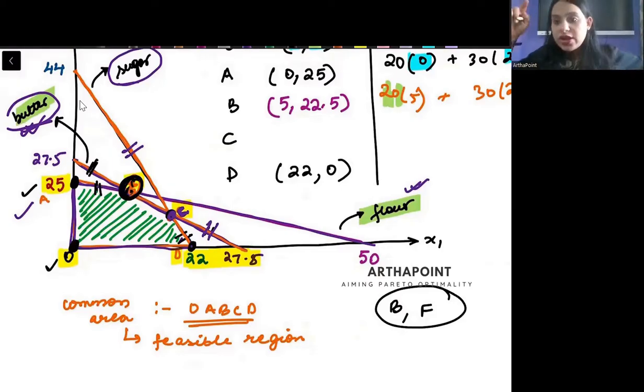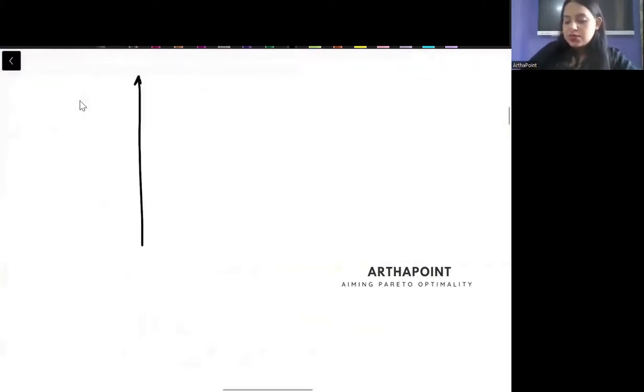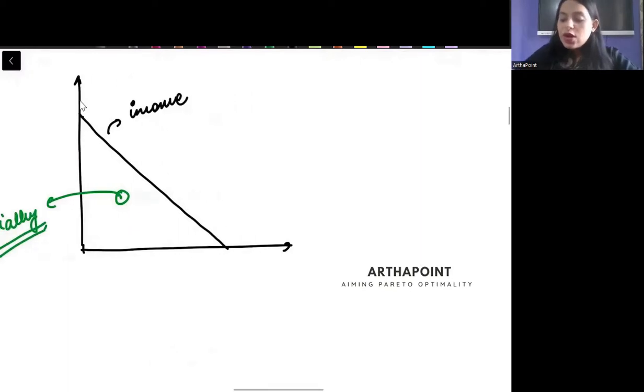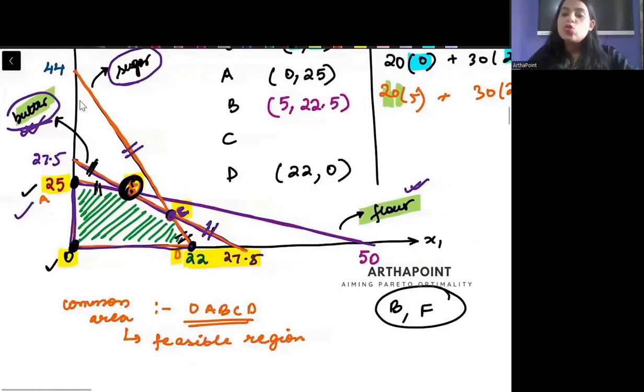When you are on a line, you would have done this in microeconomics also. When you are on the budget line, it means you are exhausting your entire income. This is your budget line. When I am on the budget line, I use my entire income. When I am below the budget line, I am using my income partially. Same is the concept here. If you are on the line, it means you are exhausting that resource completely.